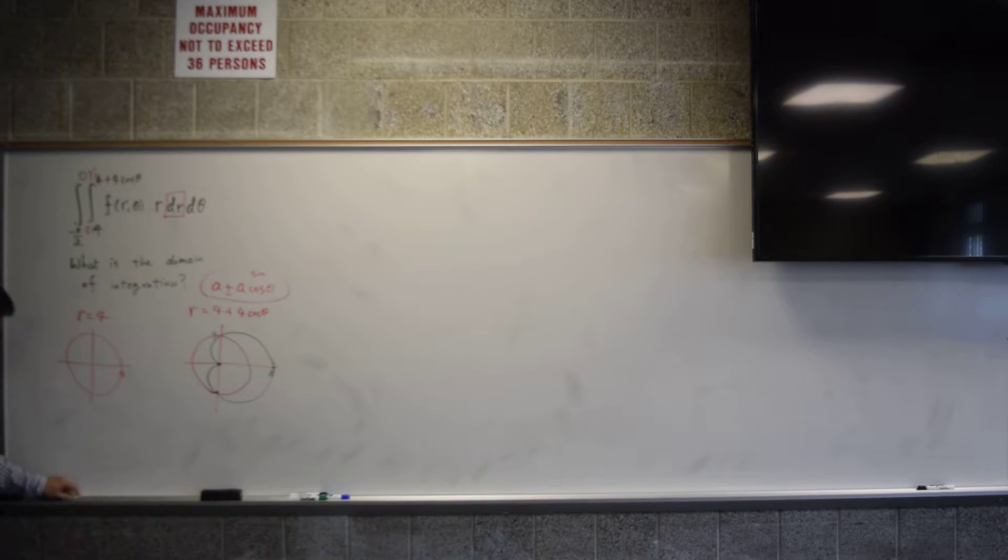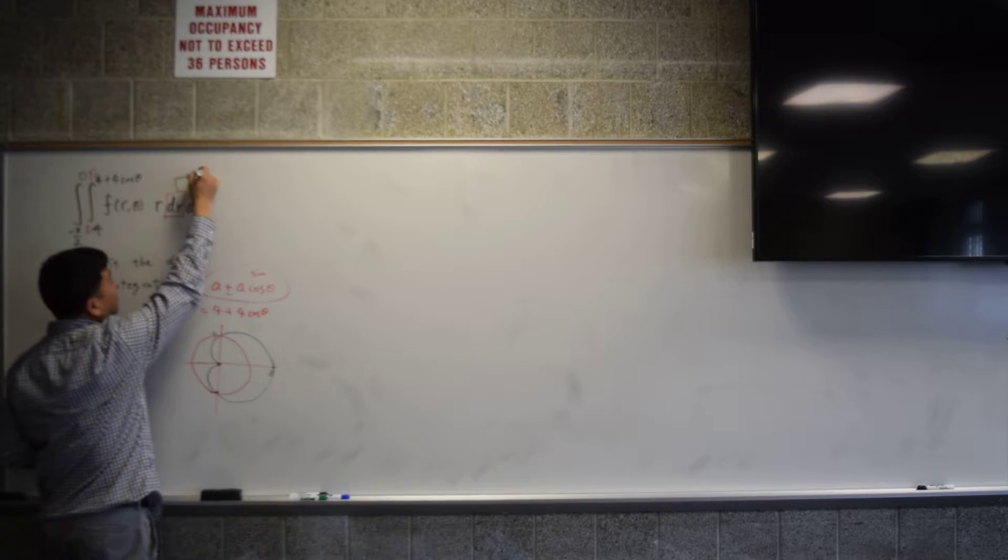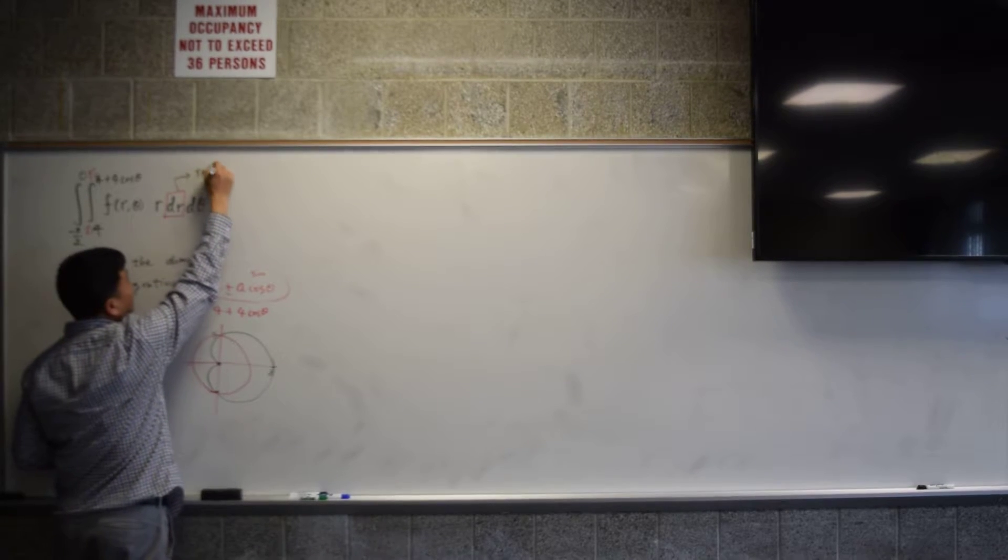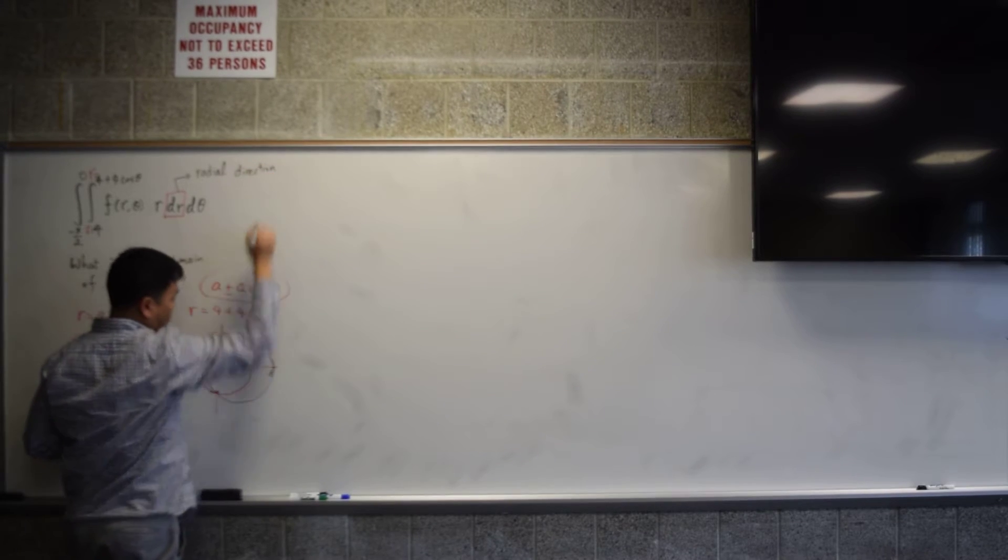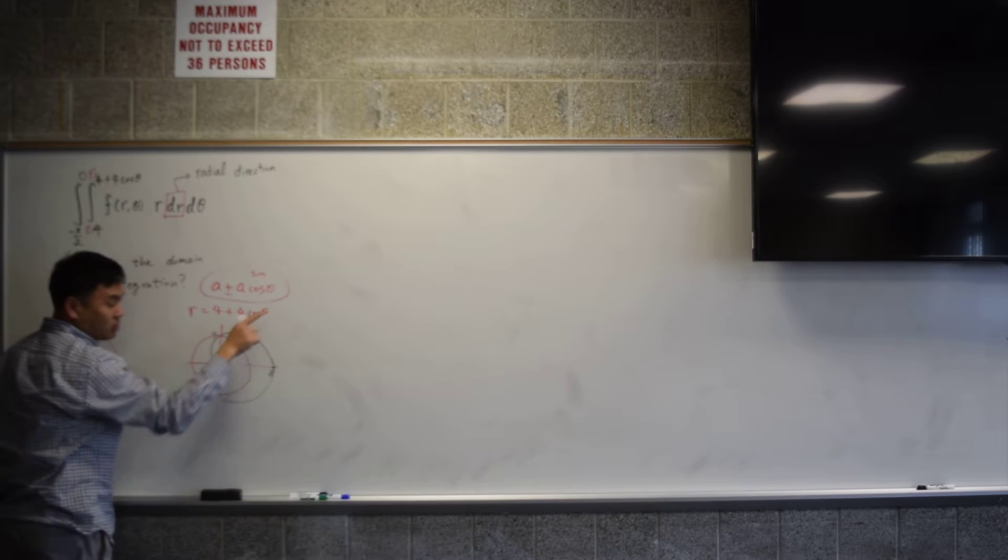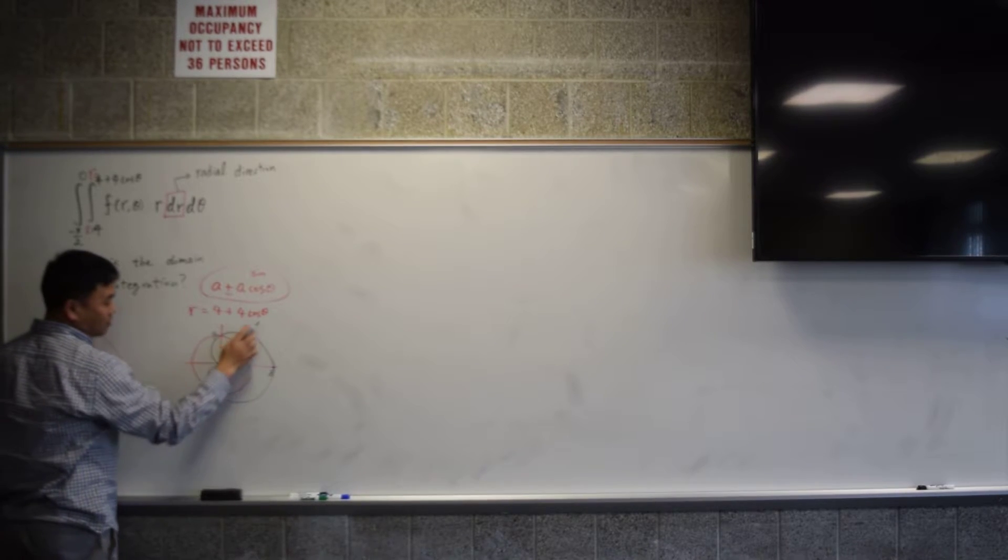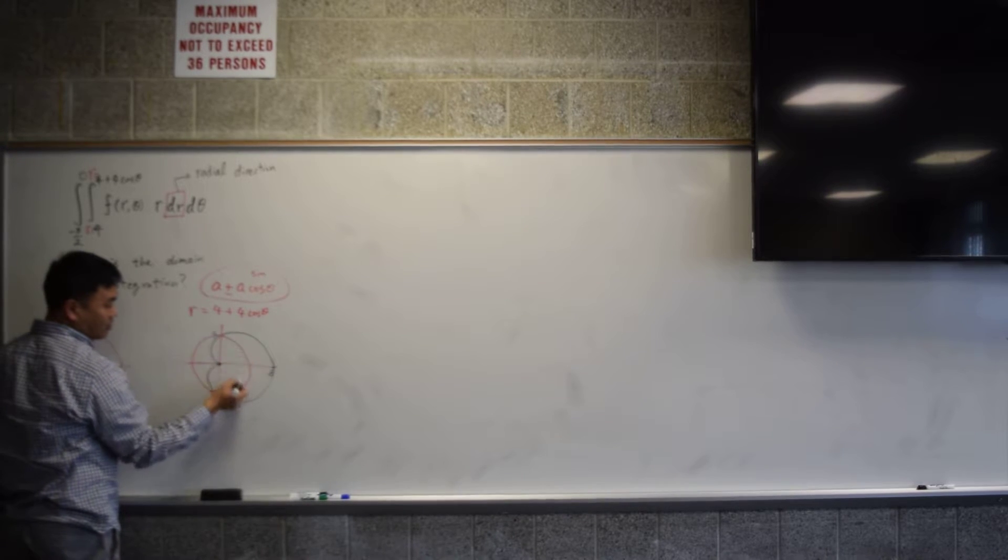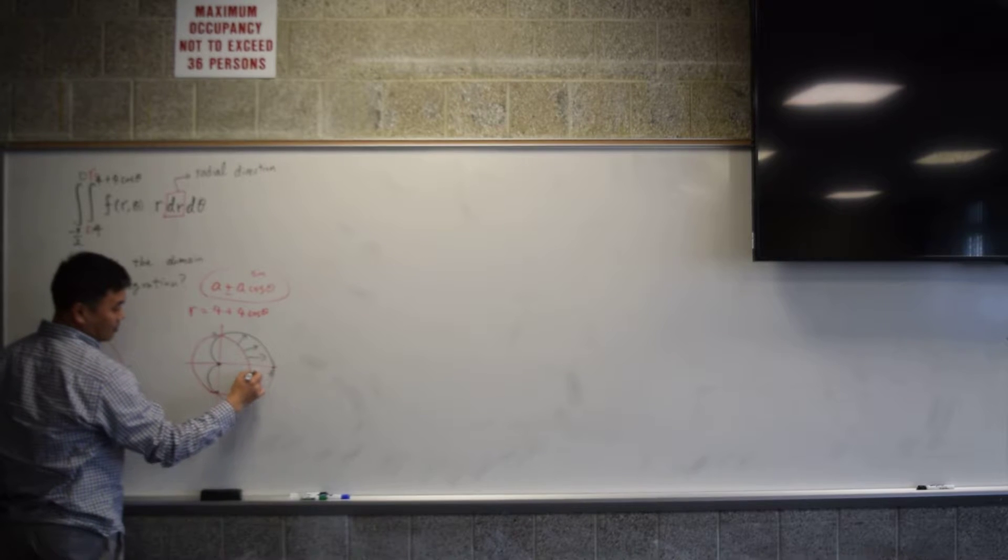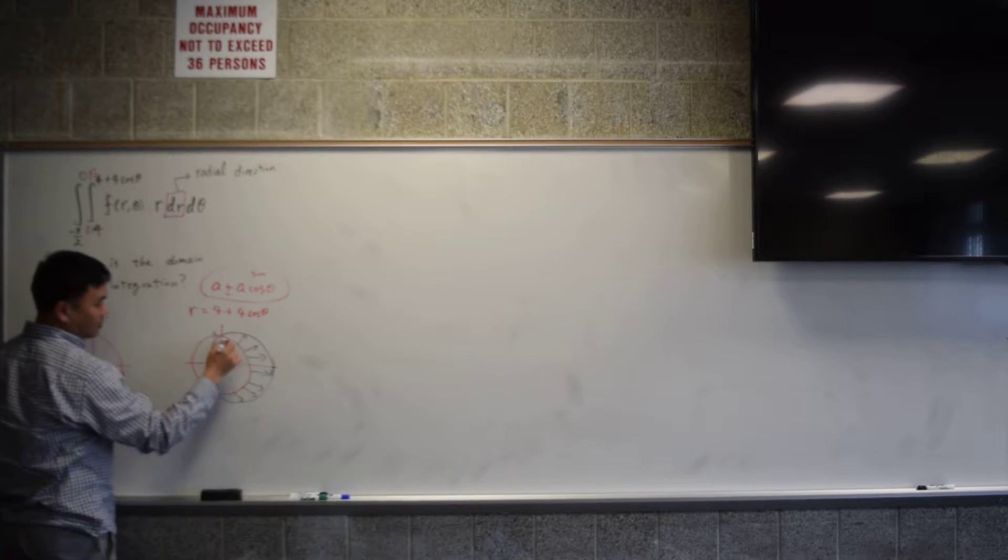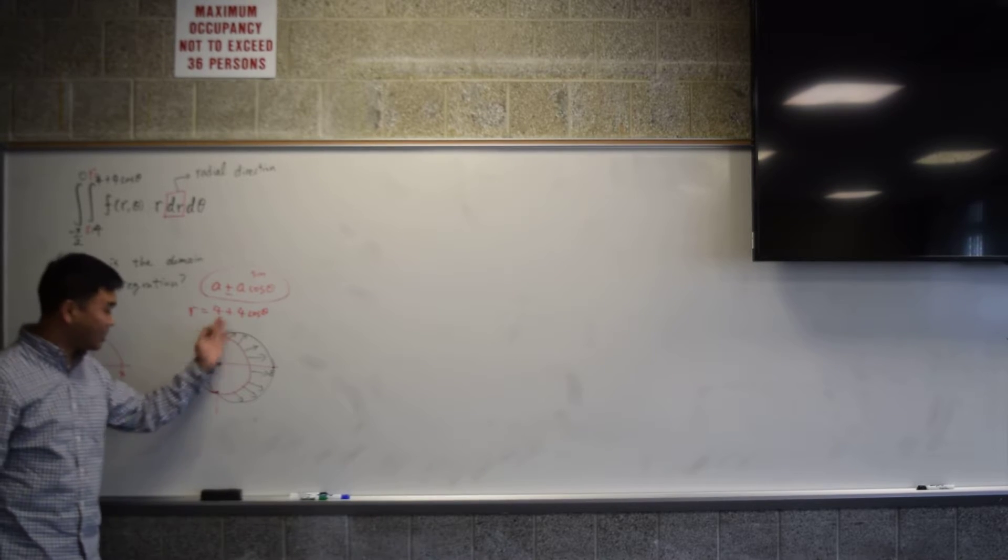We're starting at this curve and we're ending at this curve. That's what it says. You start at r equals to 4 and you end at the cardioid. So you start at the circle, you end at the cardioid. And remember, this is dr. Dr means you're going radially, radial direction.